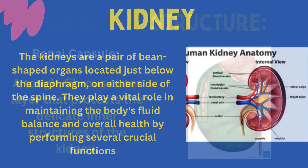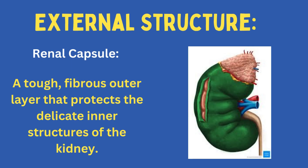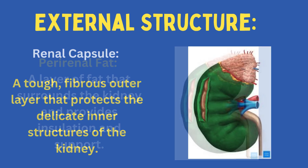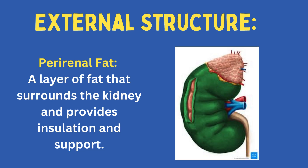External Structure. Renal Capsule: a tough, fibrous outer layer that protects the delicate inner structures of the kidney. Perirenal Fat: a layer of fat that surrounds the kidney and provides insulation and support.